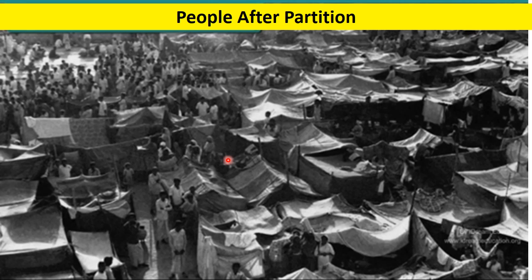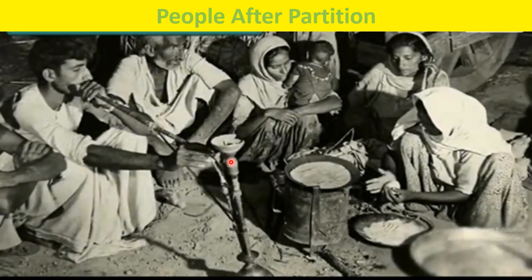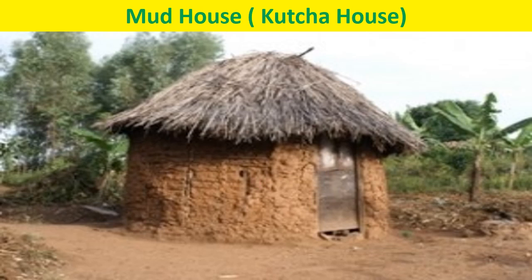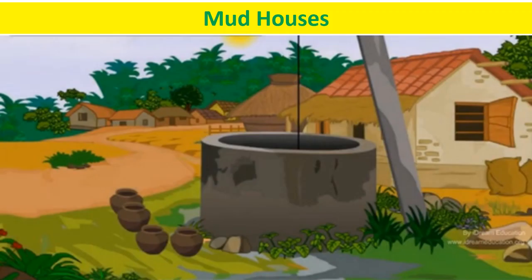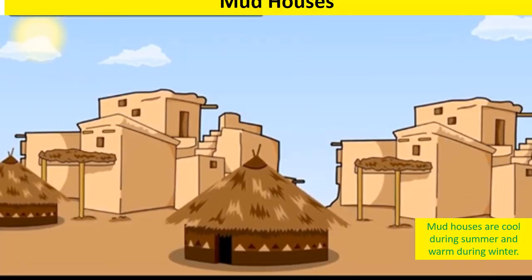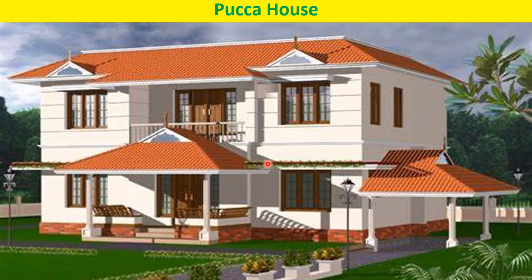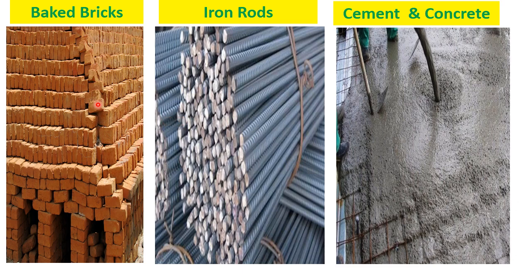They didn't have their own houses and had very few things with them — no house, no materials, no food to eat. The government helped them by giving them land to build houses. They made kachcha houses out of mud. Mud houses are cool during summer and warm during winter.